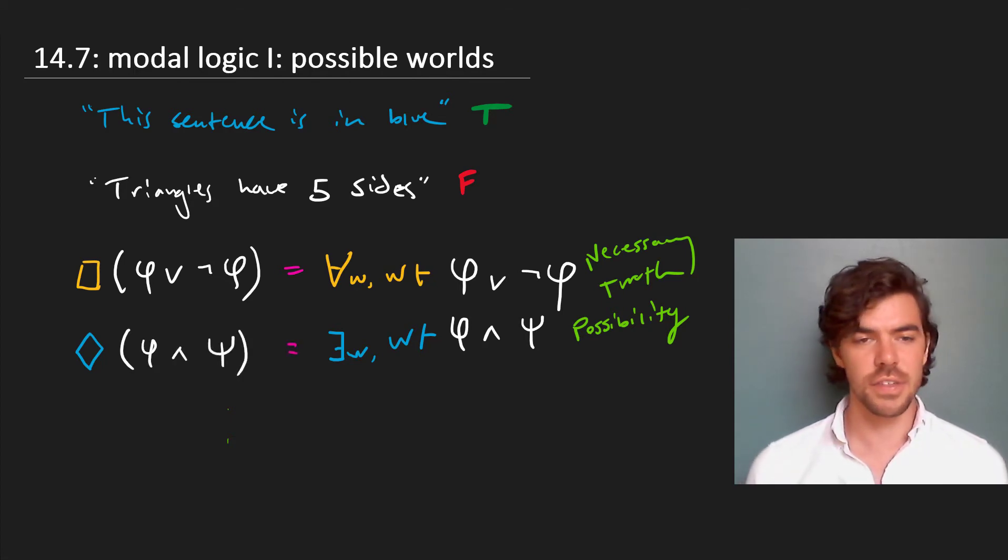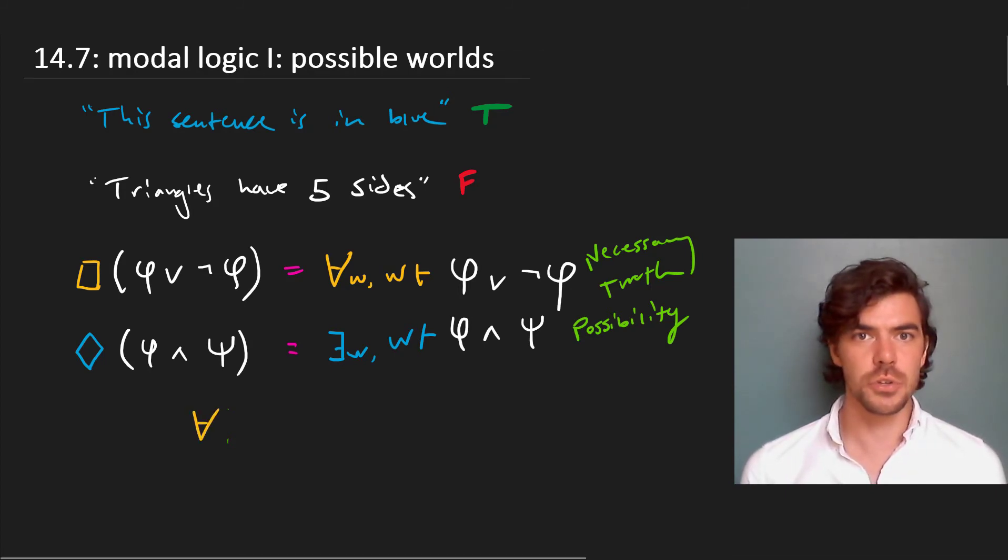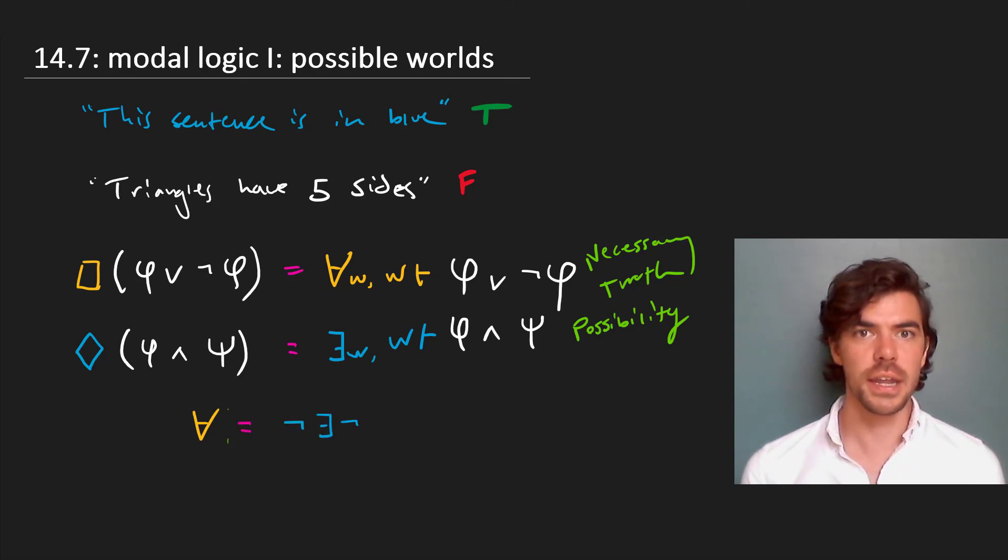Now here's one interesting thing to end on. Just as all and some are interdefinable in the sense that all is equal to not some not, and some is equal to not all not, necessarily is equal to not possibly not, and possibly is equal to not necessarily not.